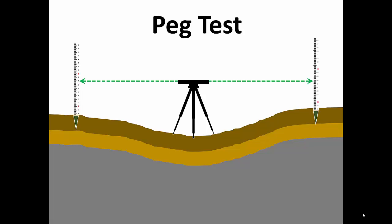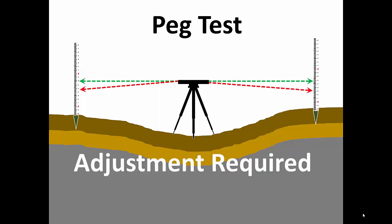If the level is out of calibration, then the line of sight can have either an upward or a downward slope leading to rod reading errors.